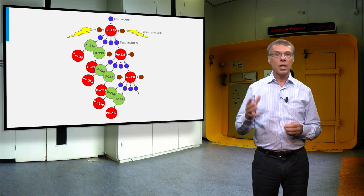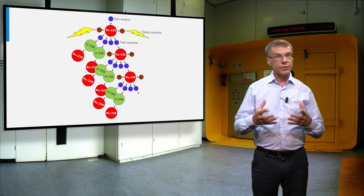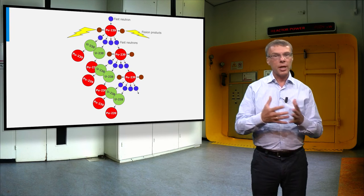The concept of a fast breeder reactor is illustrated in this figure. In each fission event we produce so many neutrons that we convert more uranium-238 into plutonium than we consume.